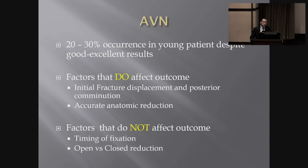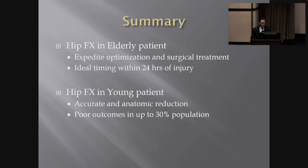There has been debate about open versus closed reduction — whether releasing the capsule where there's bleeding helps decompress the vasculature. Based on the literature, it doesn't have significant influence. Fix the fracture the best way you can using whichever approach you're more skilled with. In summary: for hip fractures in elderly patients, expedite their optimization and get them to the OR ideally within 24 hours. For hip fractures in younger patients, accurate anatomic reduction is critical, as poor outcomes can occur in up to 30 percent even in the best hands.